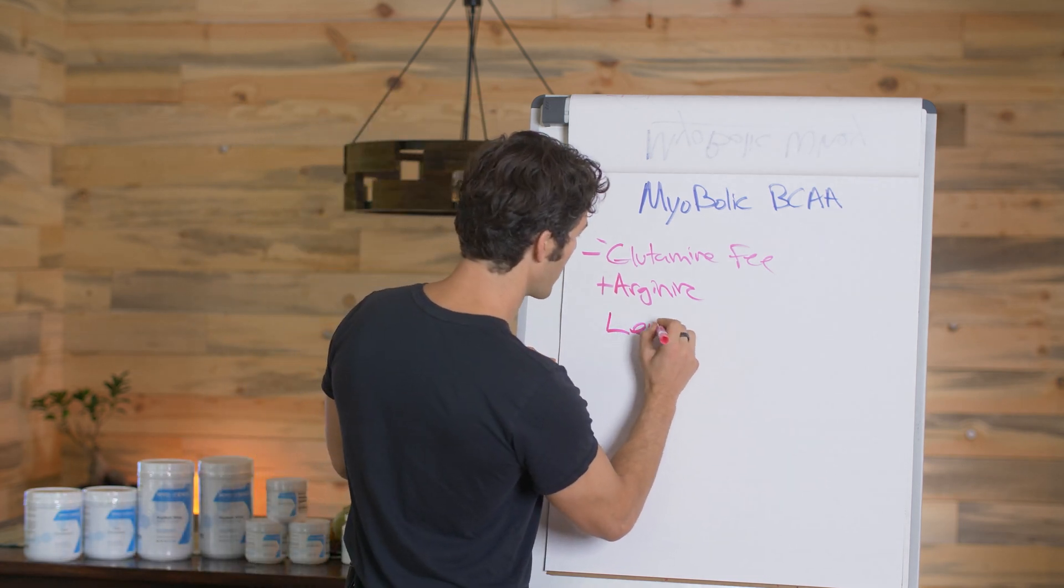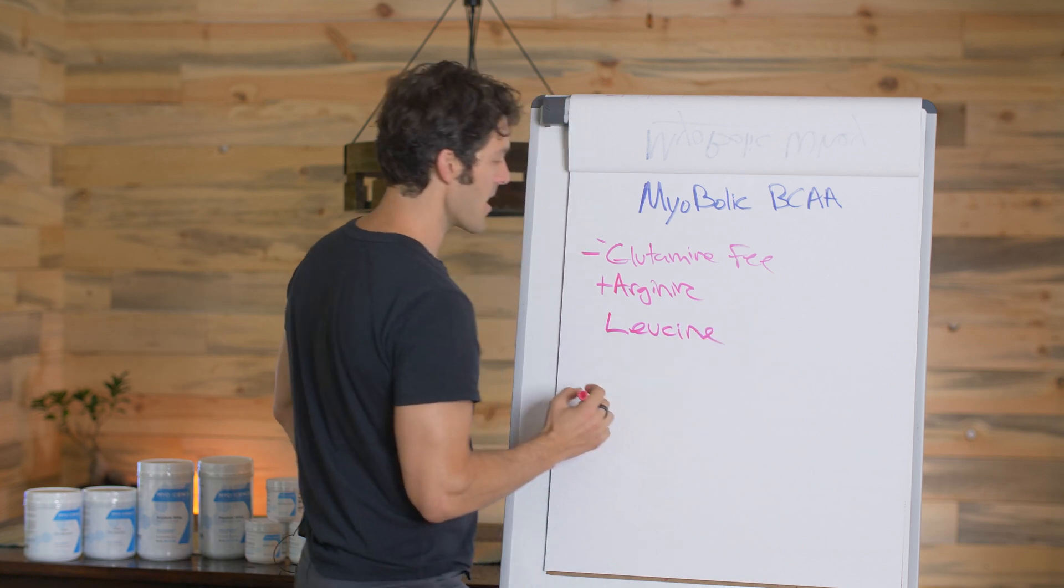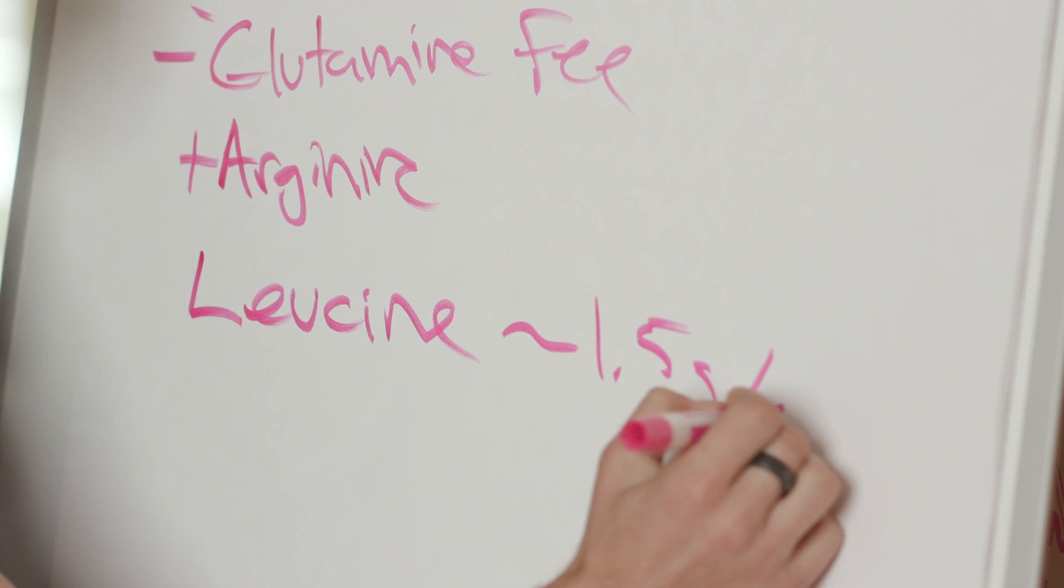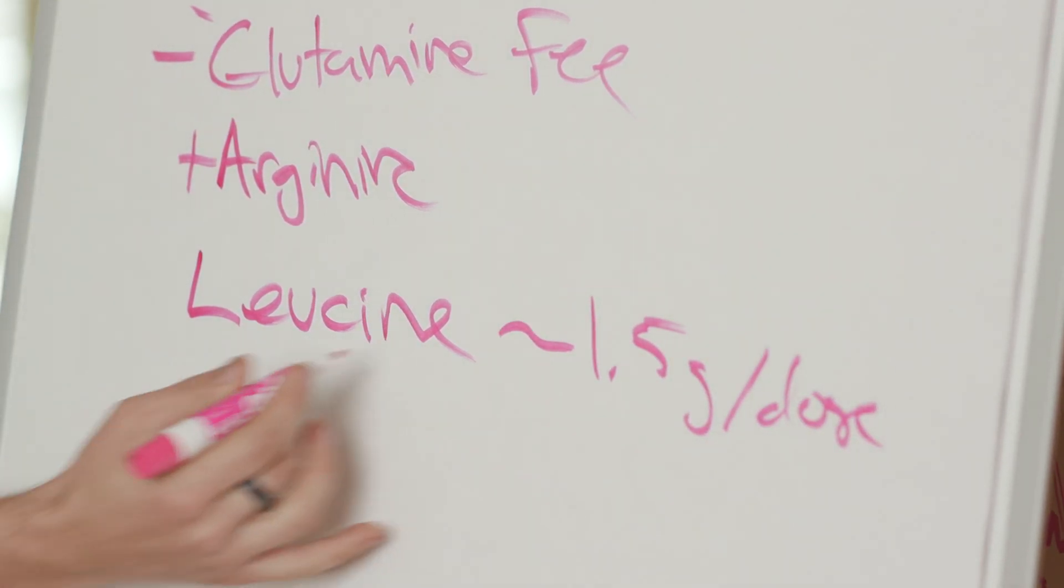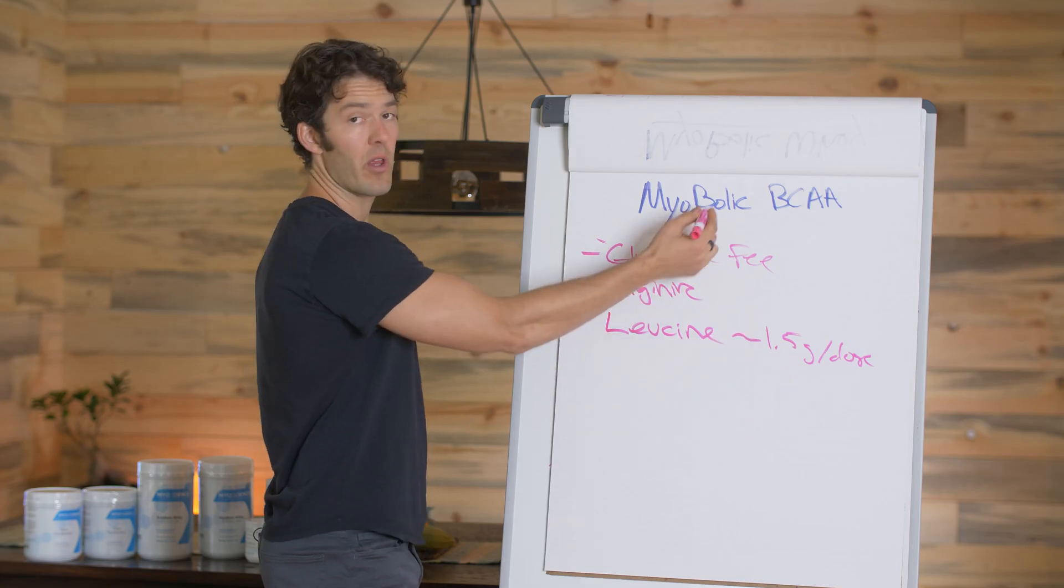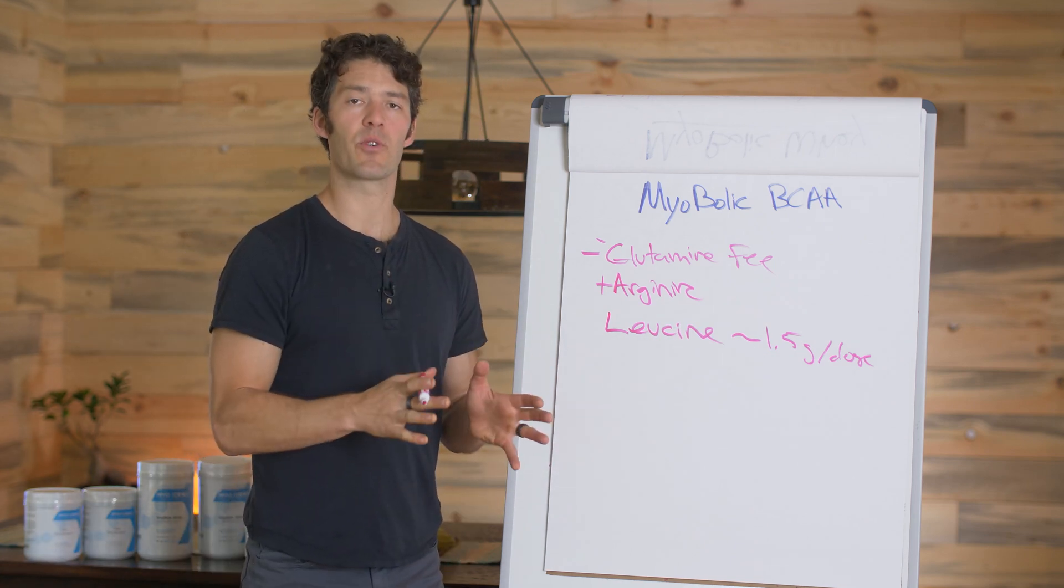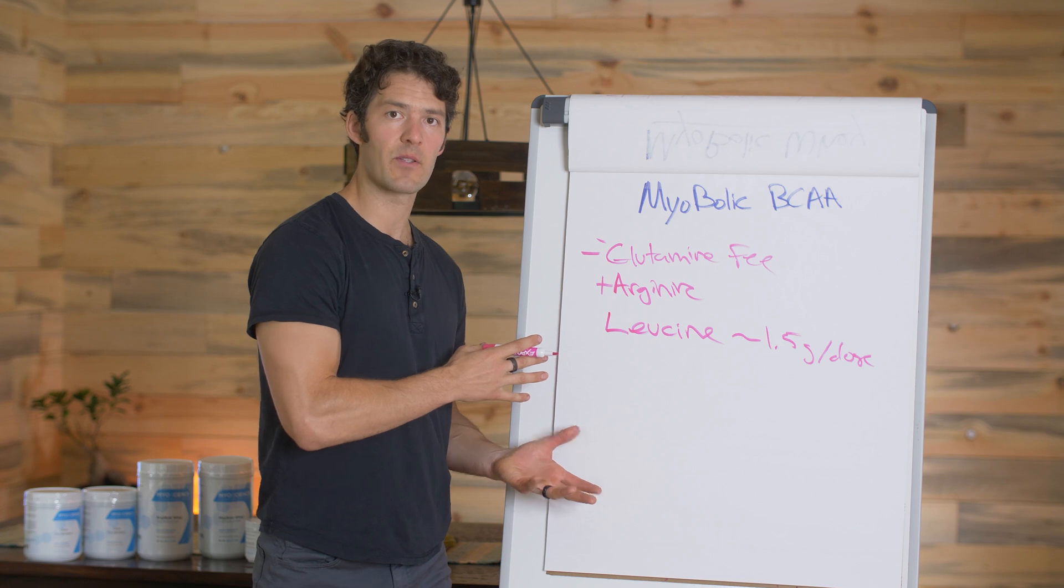So what you want here, and leucine, you want around 1.5 grams per dose. And so we're giving you 1.6 grams in the myobolic BCAA formula, which by the way, has human published research on this exact formula.